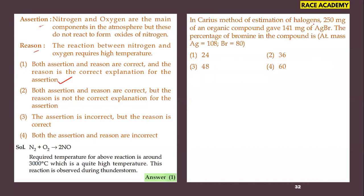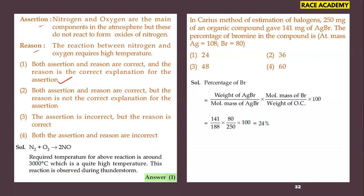In the Carius method of estimation of halogens: 250 mg of organic compound gave 141 mg of silver bromide. The percentage of bromine is to be found (atomic mass: Ag = 108, Br = 80). Using the formula: % Br = (mass of AgBr / molar mass of AgBr) × (atomic mass of Br / mass of organic compound) × 100. Molar mass of AgBr = 188; substituting all values gives 24%. The first option is correct.